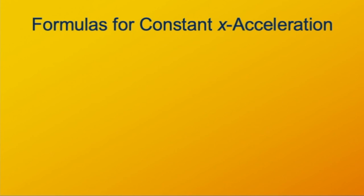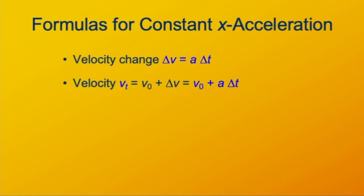So now we can summarize the results of that derivation. The formula for change in velocity is a Δt. The formula for instantaneous velocity is the initial velocity v₀ plus the velocity change Δv or a Δt. The formula for change in position has two terms, a linear and a quadratic, recall that was the rectangle and the triangle parts of the trapezoid.